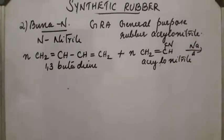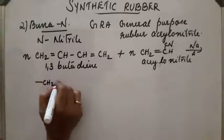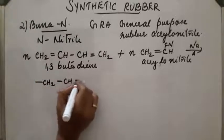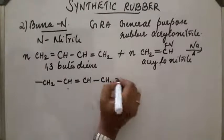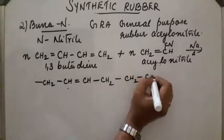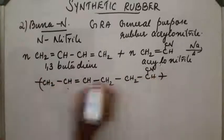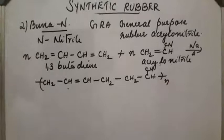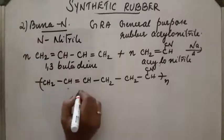In presence of sodium reaction takes place and the compound obtained will be (CH2-CH=CH-CH2)-(CH2-CH-CN) n times. This compound is called as Buna-N.